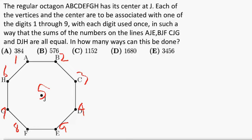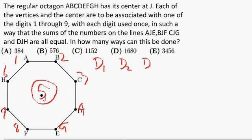So how are we going to simplify this problem? We see that the center J is common to all four diagonals. So if we take that out, we will still get a sum that is the same for all diagonals — except now instead of 15, the sum will be 10. We now have pairs instead of triplets of numbers. Let us label the diagonals D1, D2, D3, and D4.